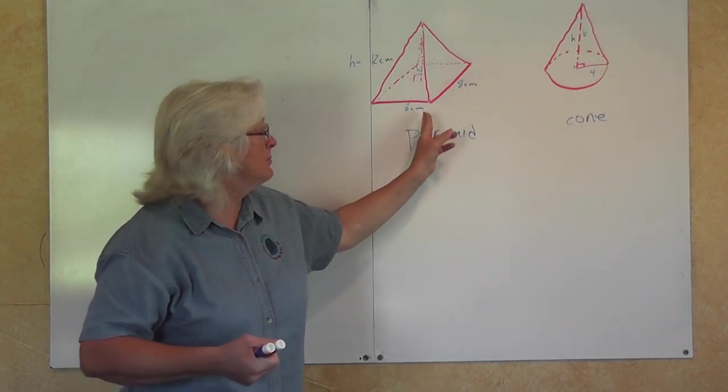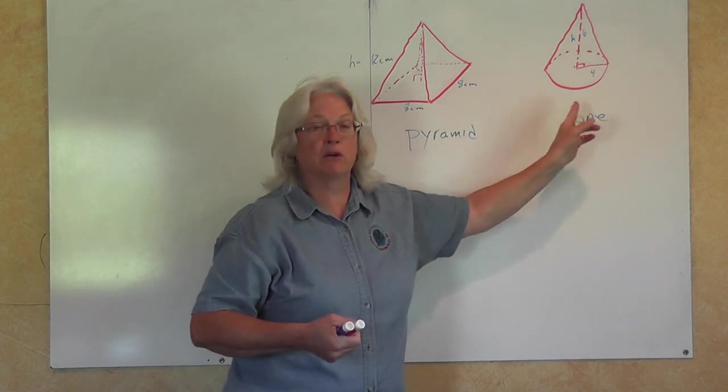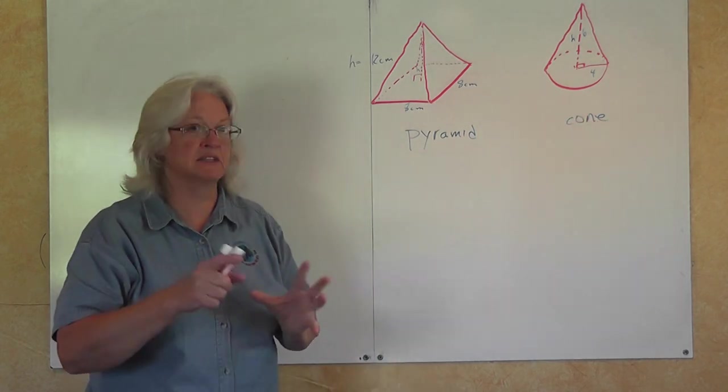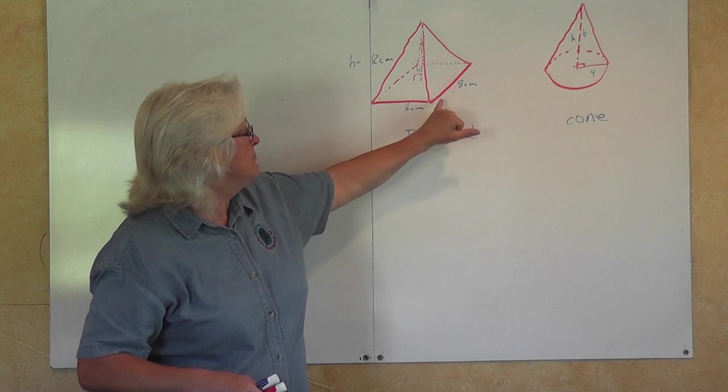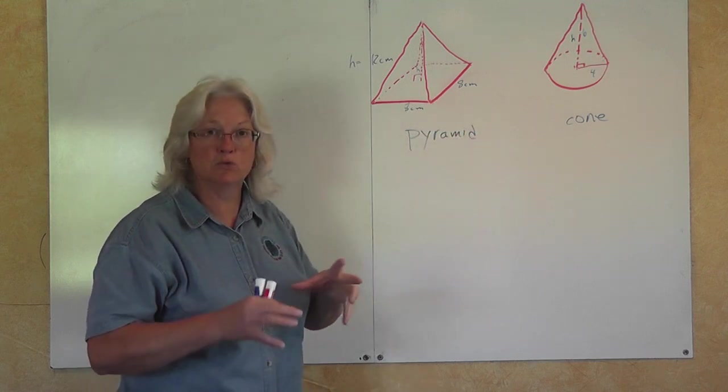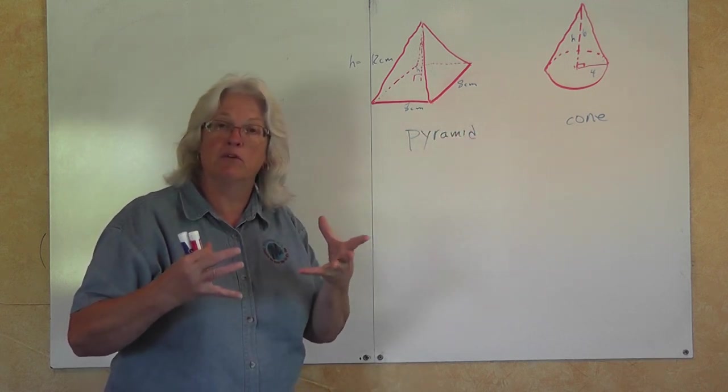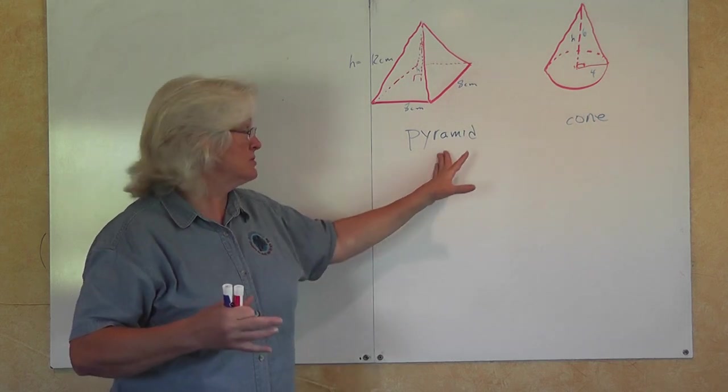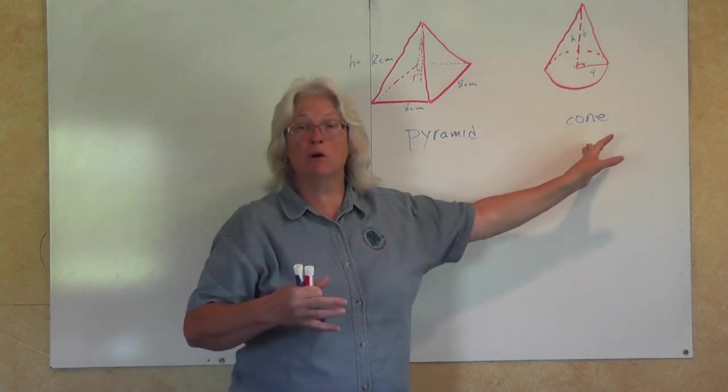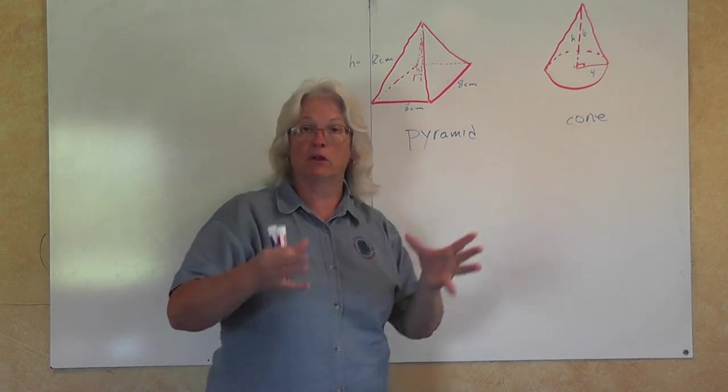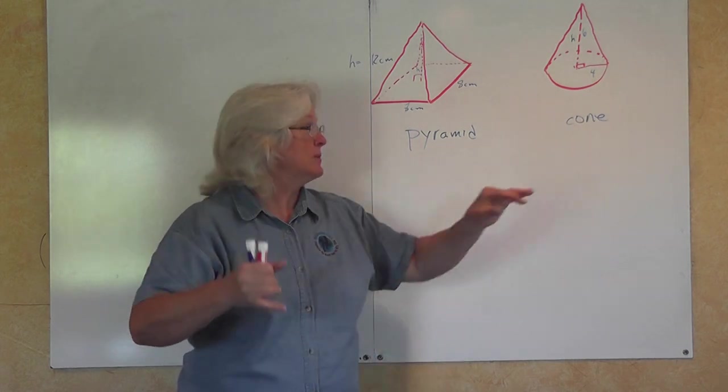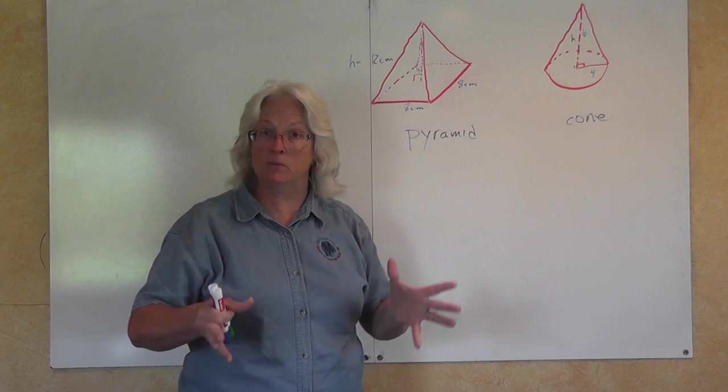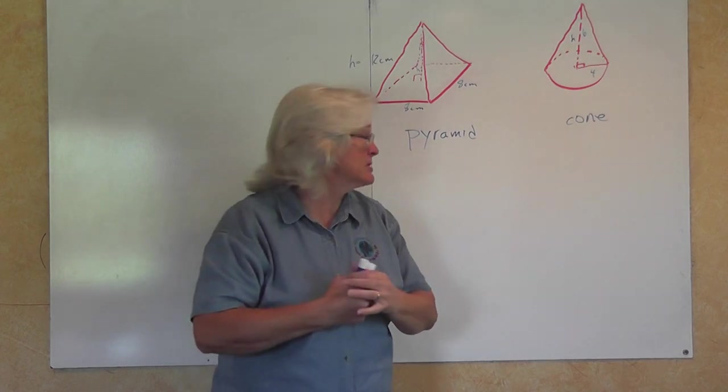So you see that whether you have a pyramid or whether you have a cone the relationship is the same. The volume of the pyramid is one-third the volume of a prism because you have to use it three times. The volume of the cone is one-third the volume of the cylinder because you have to fill that cone up three times in order to be able to fill up the cylinder.